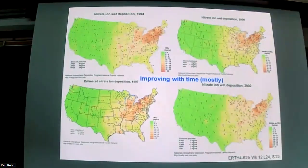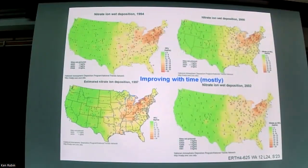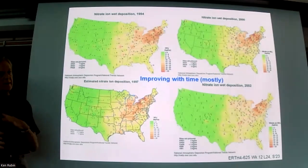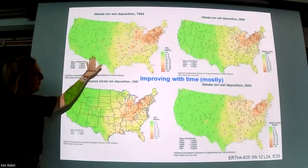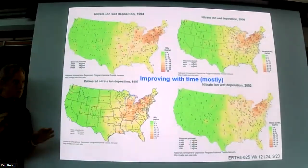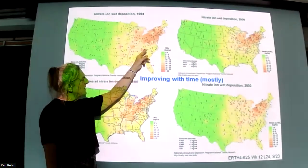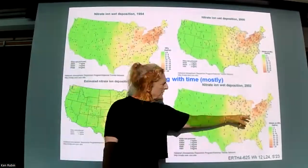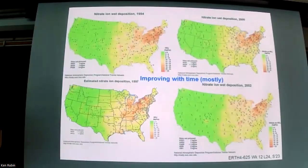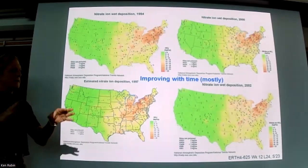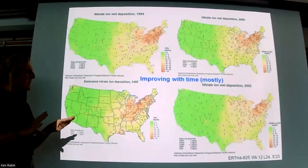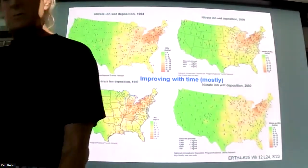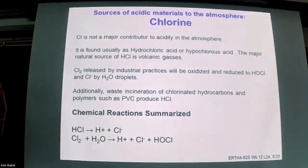These plots for nitrogen — similar to the sulfur maps with red being high and green being low, 1994 to 2000 — show that the change is not as dramatic. You can still see more nitrogen oxides dissolved in water as nitrate in the northeast, reflecting the fact that the country, like Western Europe, has switched from less sulfur-bearing fuels to more nitrogen-producing fuels — that is, from coal to gasoline.